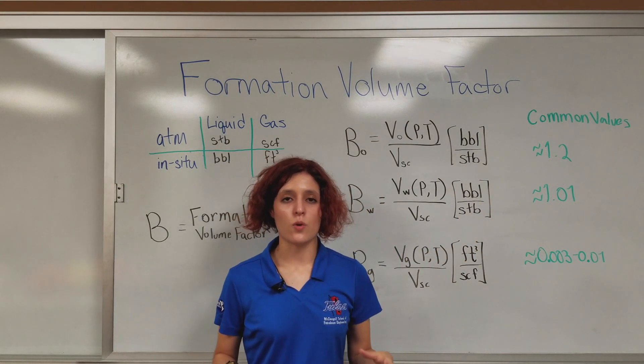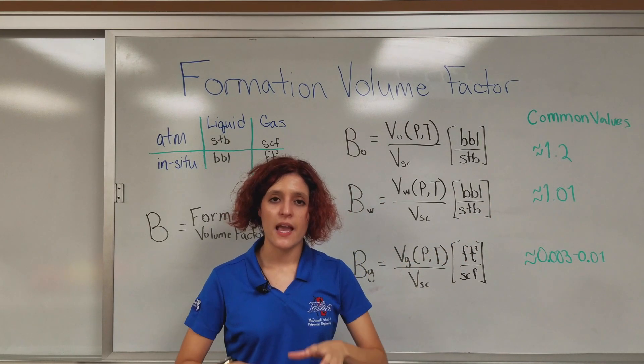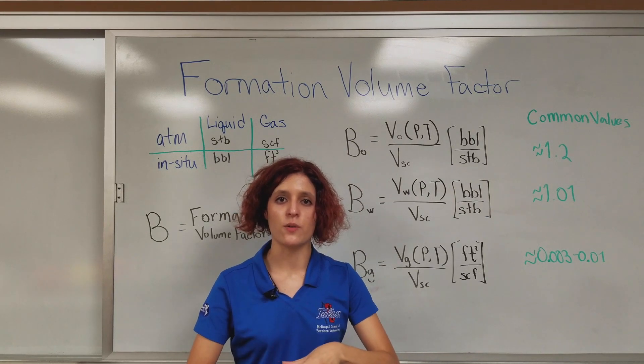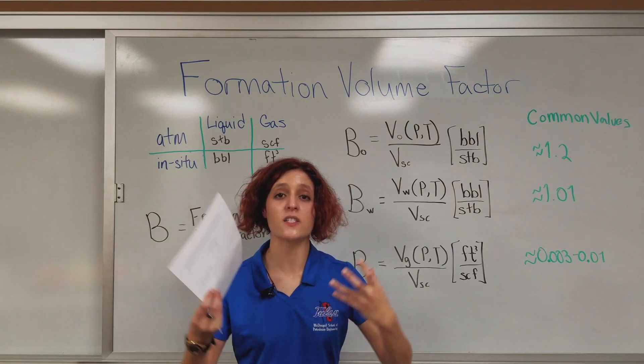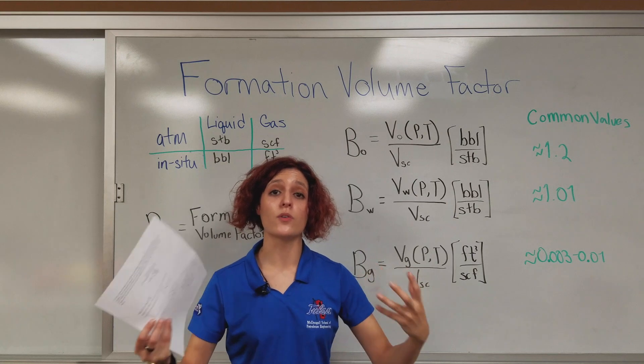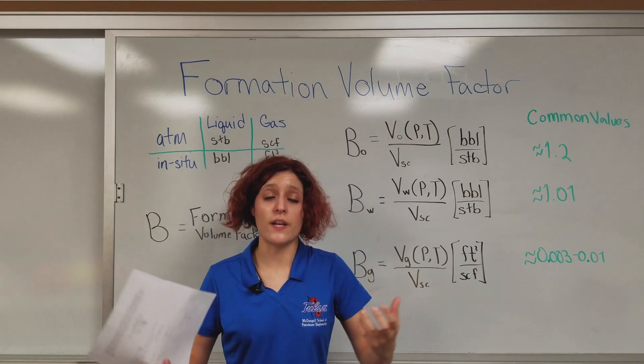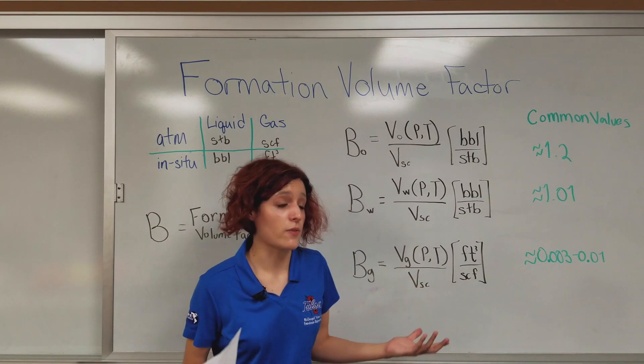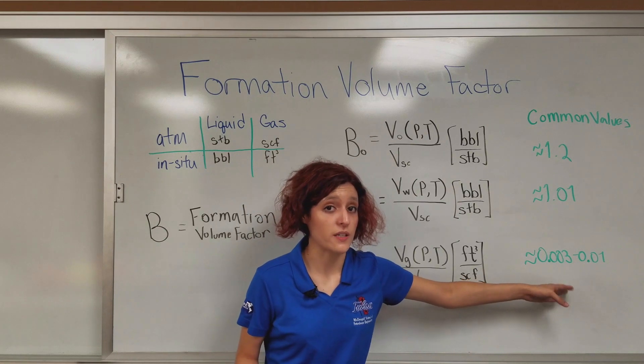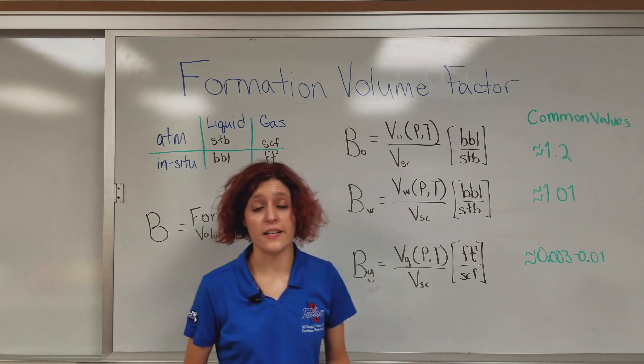Gas, which will occupy a lot less space at huge pressures and temperature. When it comes to the surface, it'll expand and occupy more space. So, its formation volume factors can be in the ranges of 0.003 to 0.01 as its common values.